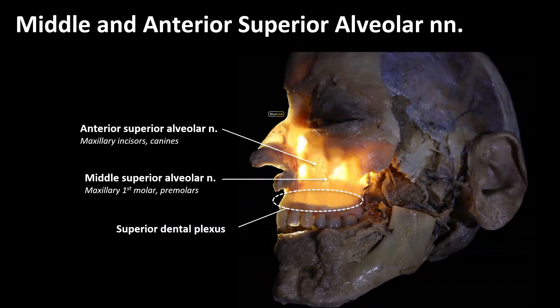These are very tiny nerves that run through the maxilla bone, but we can still make out their outlines when we shine a light through the maxillary sinus. Both travel down through the maxilla to that superior dental plexus and then get divvied up to individual teeth. The anterior superior innervates the maxillary incisors and canines, while the middle superior goes to the premolars and overlaps with the posterior superior to also innervate the first molar.